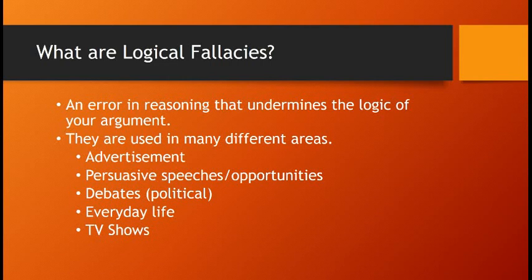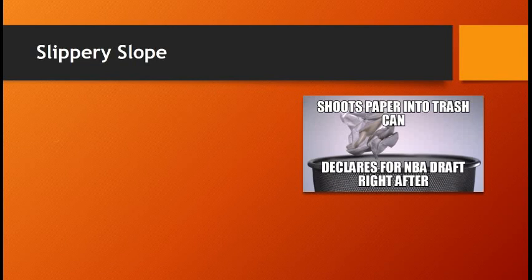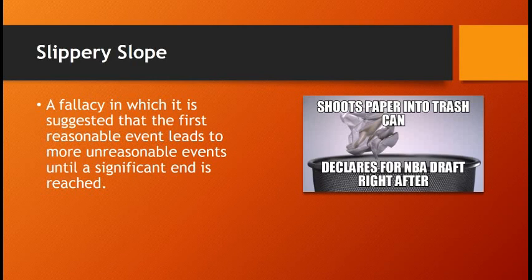We're going to talk about 10 of them — we could talk about about 200, but that seems like overkill. So the first is the slippery slope. I have a meme on each slide. Slippery slope is a fallacy in which it is suggested that the first reasonable event leads to more unreasonable events until a significant end is reached — kind of like: if A, then B, then C, then eventually Z.